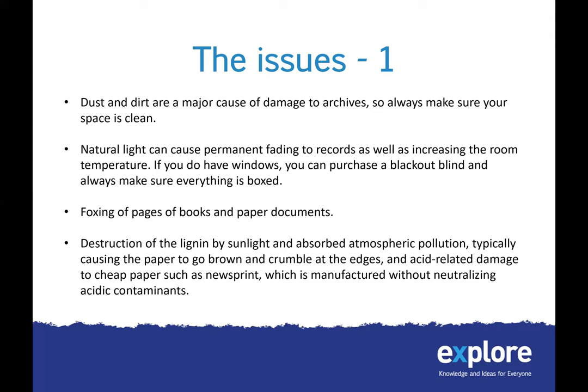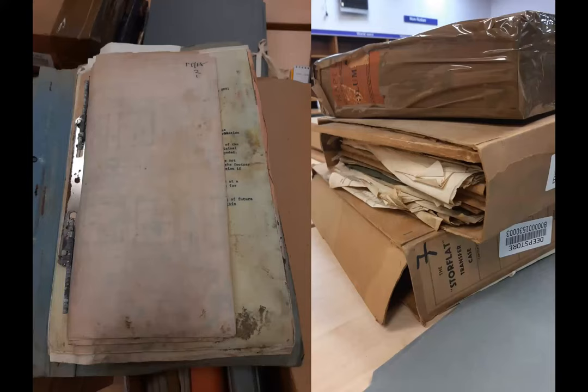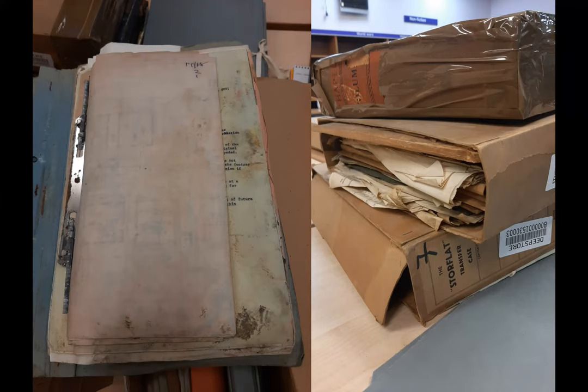To give you an idea of how poor conditions affect archives, here are some examples from our collections — these are in their original state as received by the archive service. In the image on the left you can see a combination of dust and dirt at the bottom of the papers, plus water damage causing marking on the pages. Because they were kept in damp conditions, the metal fastening is incredibly rusty. The image on the right shows what some of these records can look like in their original state.